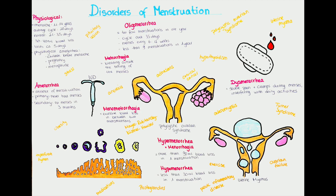Causes for primary amenorrhea include chromosomal or genetic abnormalities which can prevent the ovaries, hypothalamus, or pituitary gland from functioning properly. This is the case, for example, in Turner syndrome, where a woman is missing the second X chromosome, or in hyperprolactinemia. Another cause is when the endometrium sheds from the uterus but there is an outflow obstruction, so the patient will not know menstruation occurred. This is seen in an imperforate hymen, cervical or vaginal agenesis, Mayer-Rokitansky-Küster-Hauser syndrome, or a transverse vaginal septum.